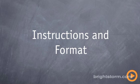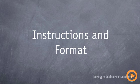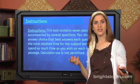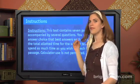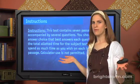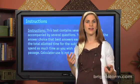So let's get started, but first we'll talk about instructions and the format. This test contains seven passages, each accompanied by several questions. You should select the answer choice that best answers each question. Within the total allotted time for the subject test, you may spend as much time as you wish on each individual passage. Calculator use is not permitted — but don't worry about it. They just say that to freak you out. You'll never need a calculator on the science section.